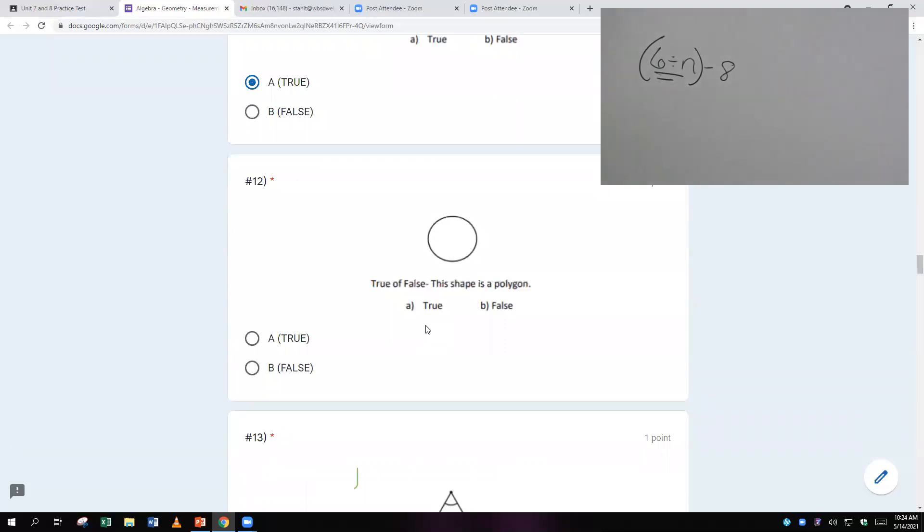True or false, this shape's a polygon. Ooh, we just said it has to have straight sides. Sorry, that's not true. There's no straight sides. There's no straight lines.